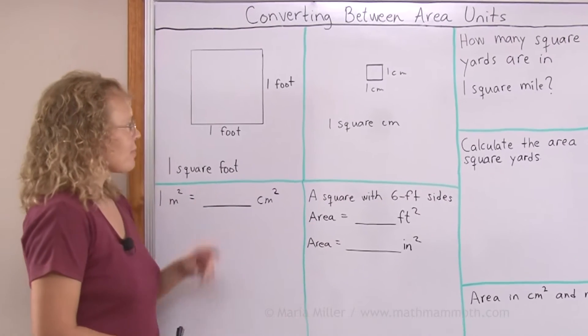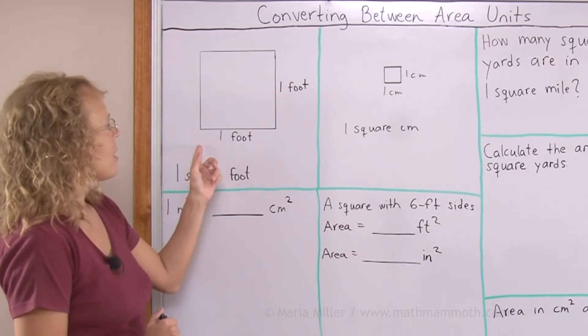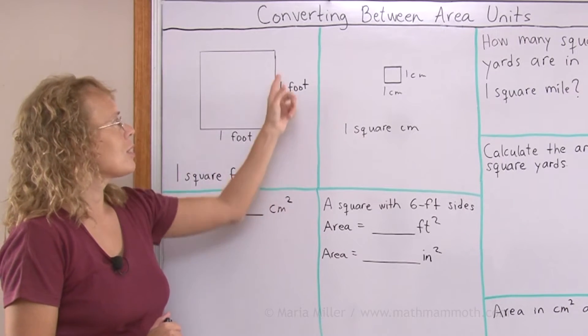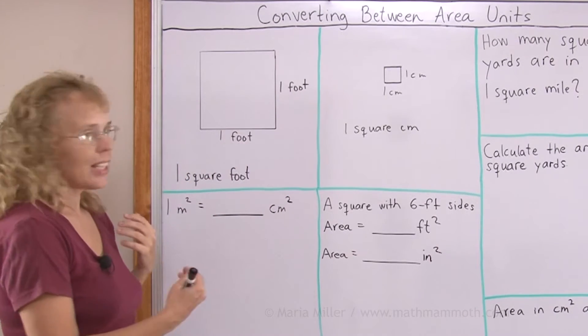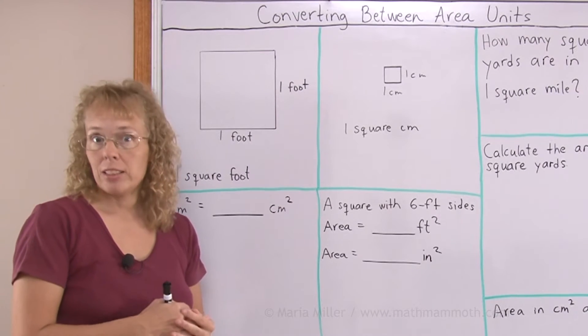For example, I drew here one square foot. It means that this side is one foot long, this side is one foot long. So its area is one square foot.